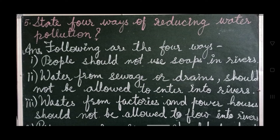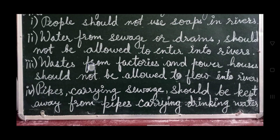Now let us see the last question of this chapter: State 4 ways of reducing water pollution. Answer — Following are the 4 ways: People should not use soap in rivers. Water from sewage or drains should not be allowed to enter into rivers. Waste from factories and powerhouses should not be allowed to flow into rivers. Pipes carrying sewage should be kept away from pipes carrying drinking water.